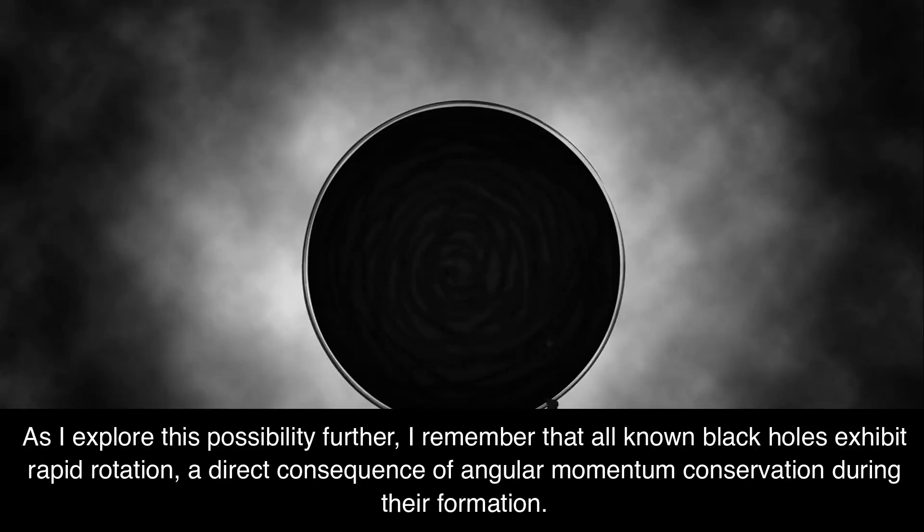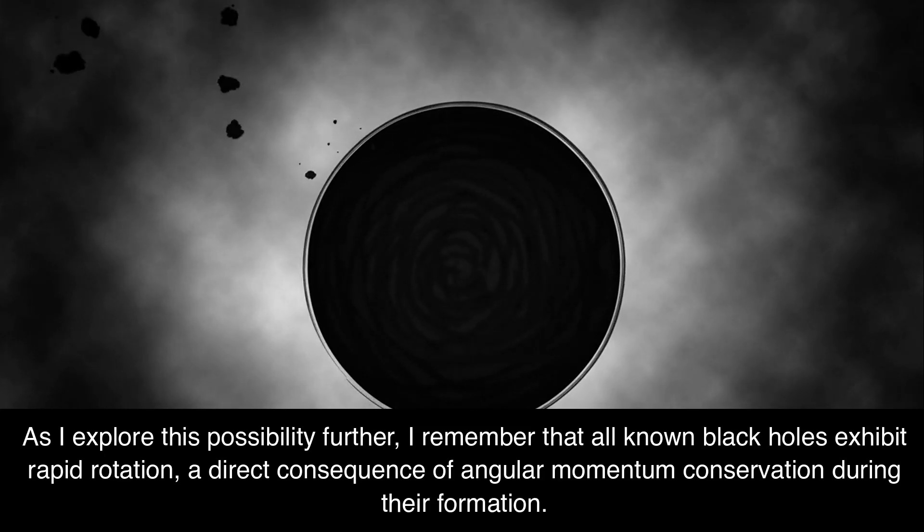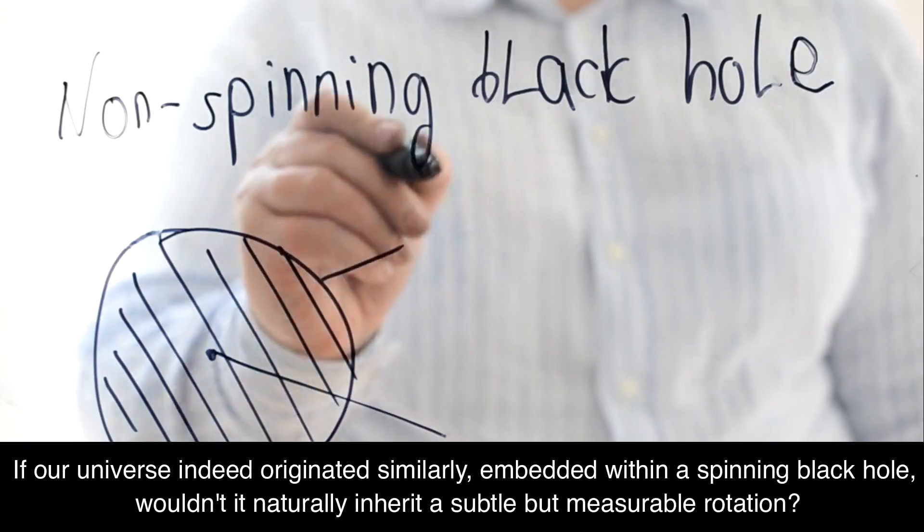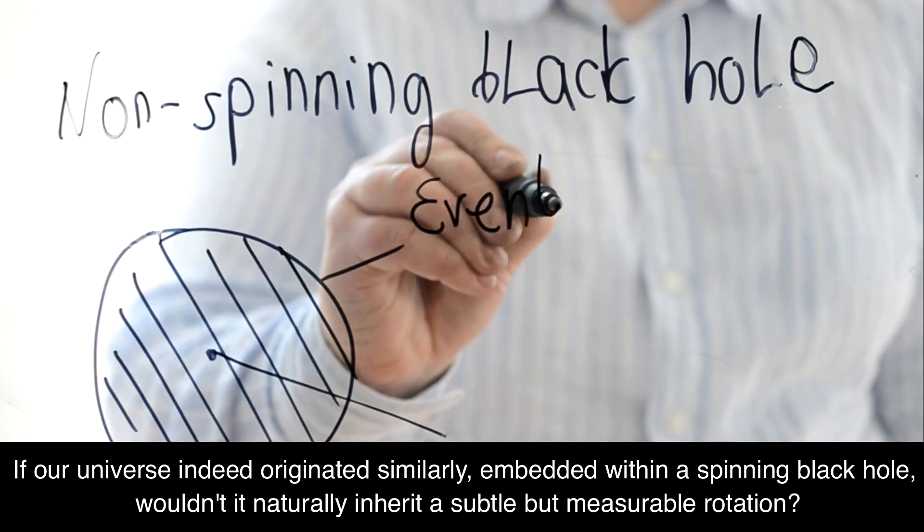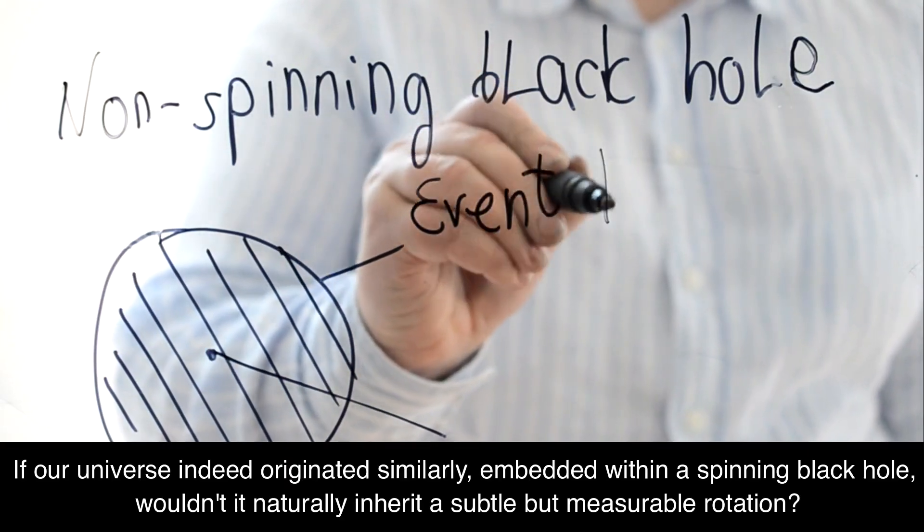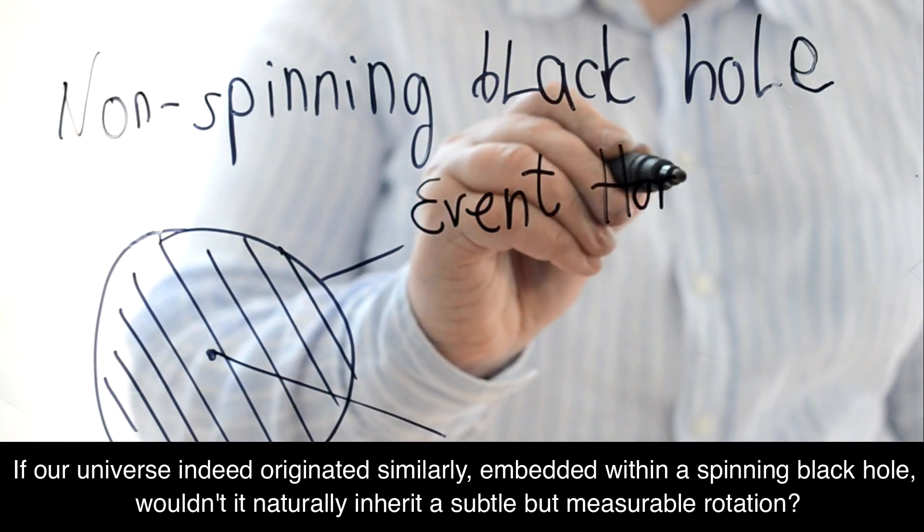As I explore this possibility further, I remember that all known black holes exhibit rapid rotation, a direct consequence of angular momentum conservation during their formation. If our universe indeed originated similarly, embedded within a spinning black hole, wouldn't it naturally inherit a subtle but measurable rotation?